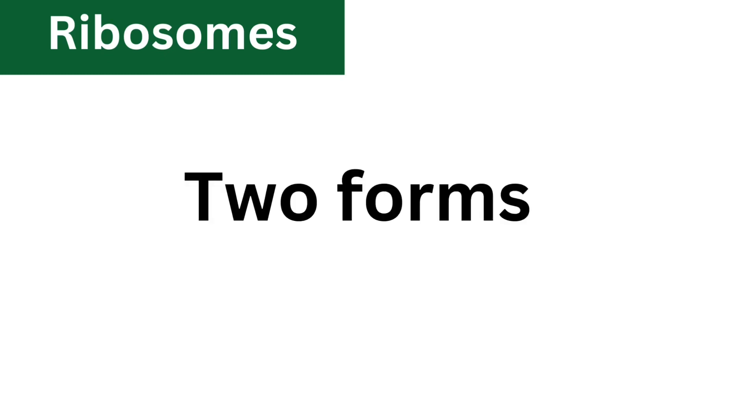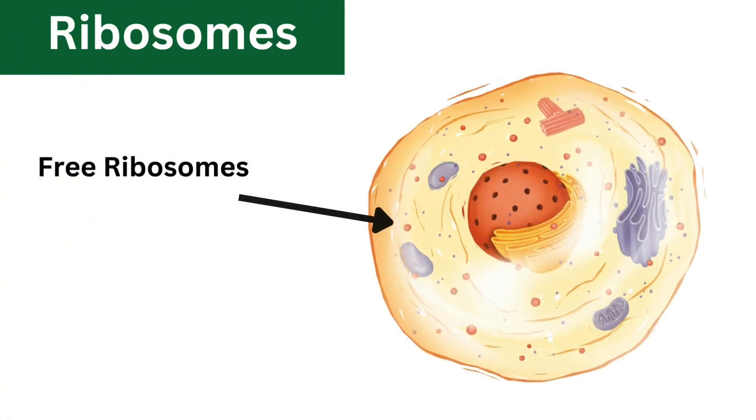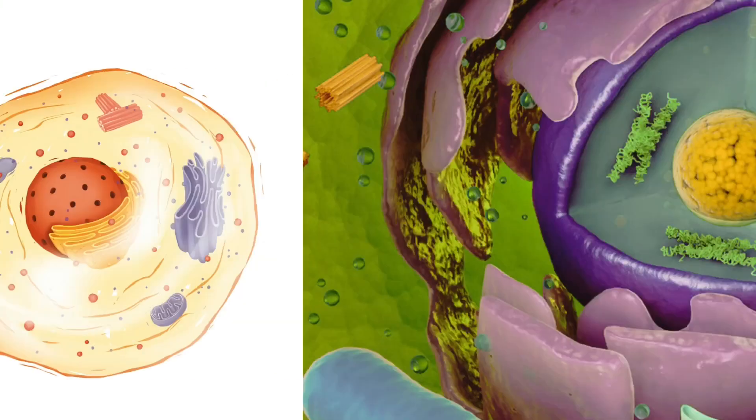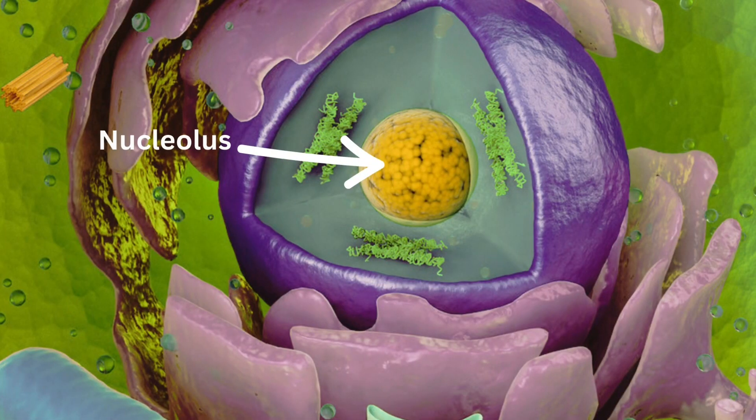They exist in two main forms: free ribosomes which float freely in the cytoplasm, and bound ribosomes which are attached to the endoplasmic reticulum. Ribosomes are manufactured in the nucleus and transported to cytoplasm through nuclear pores.